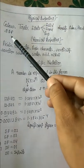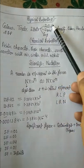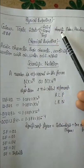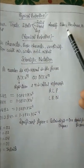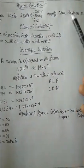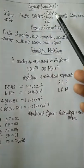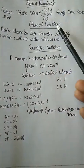For example: color, taste, state (solid, liquid, or gas), density, odor, hardness, melting point, and boiling point. These are physical properties.